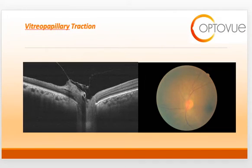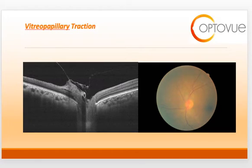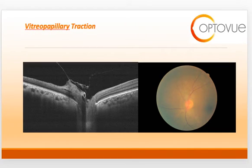Just as you can get vitreomacular traction, you can get vitropapillary traction — because anywhere the vitreous is attached, you can potentially get disruption if the force is too strong. Here you can see what the optic nerve head looks like with vitropapillary traction, with the vitreous tugging tightly on the nasal aspect of the optic nerve head. On the right-hand side, you can almost see a pseudopapilledematous appearance because the vitreous is imposing force on the nasal part of the optic nerve head. This video hopefully served as a nice introduction to diseases of the vitreomacular and vitropapillary interface.